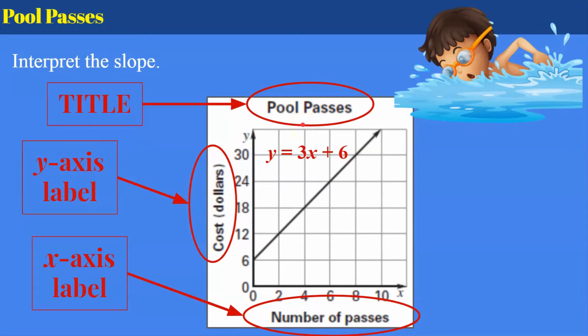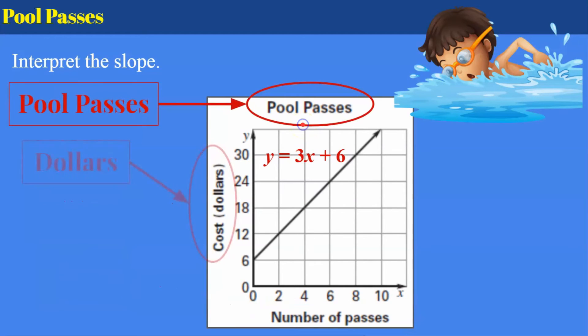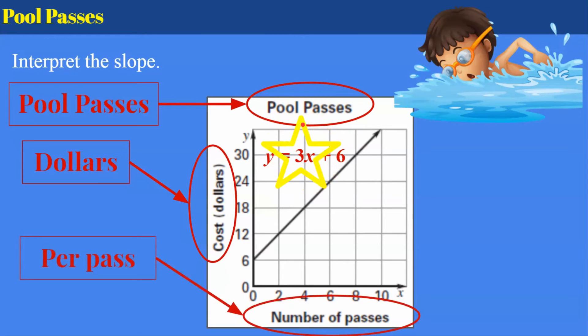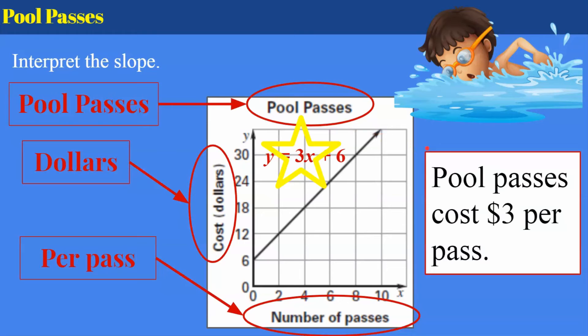So now let's go through passes, dollars, pass, and then our slope is 3. So we're going to put all of this together. Pool passes cost $3 per pass. So notice I'm mentioning what we are doing. It's the cost and my unit of dollars and it's per pass. So remember our ratio, our slope is always over 1. This is really 3 over 1, so increase 3 over 1. So that's our rate of change. But what does it mean to pool passes? Pool passes cost $3 per pass.